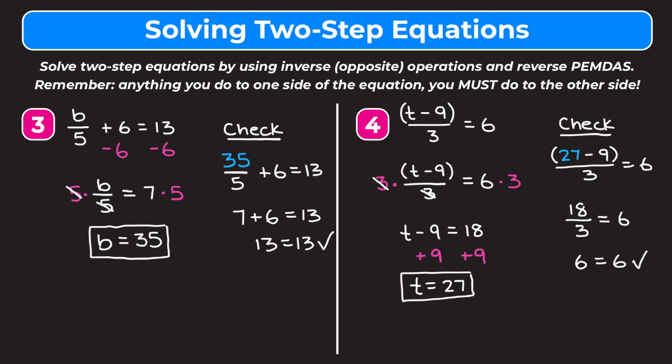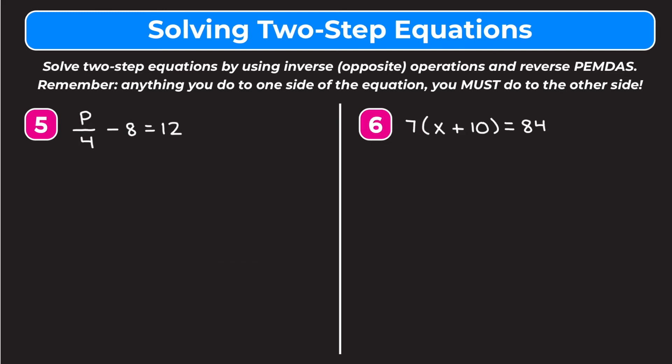Let's take a look at two more examples. I encourage you to pause the video and try them on your own, then restart and watch my explanation to check your answers. Example five is p divided by 4 minus 8 equals 12. Reverse PEMDAS tells us to get rid of the minus 8 first by adding 8 to both sides. On the left, minus 8 and plus 8 cancel out, leaving p over 4. On the right, 12 plus 8 is 20. So p divided by 4 equals 20.